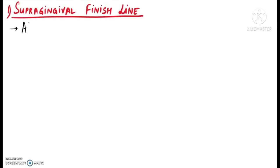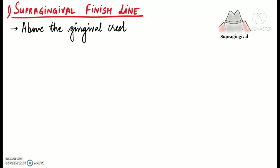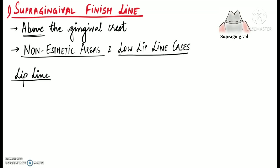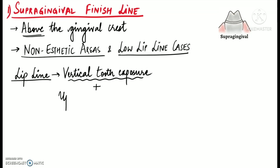Supra-gingival finish line is basically placed above the gingival crest, and generally supra-gingival finish lines are mostly used in non-aesthetic areas and in low lip line cases. So what is a lip line? Lip line is basically the gingival smile line which describes the amount of vertical tooth exposure along with the adjacent upper gingival tissue when smiling naturally.